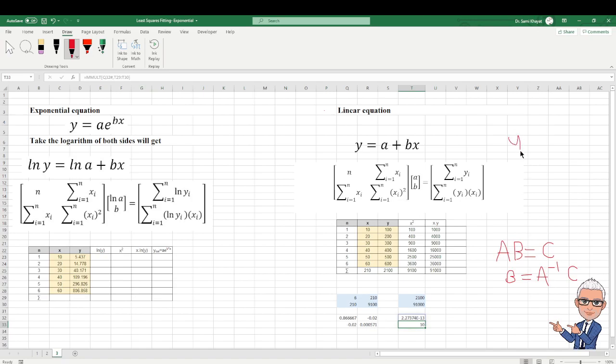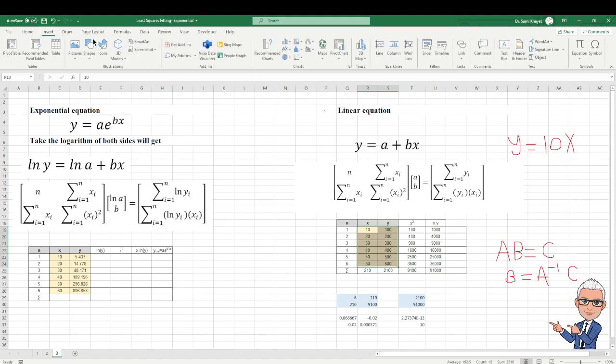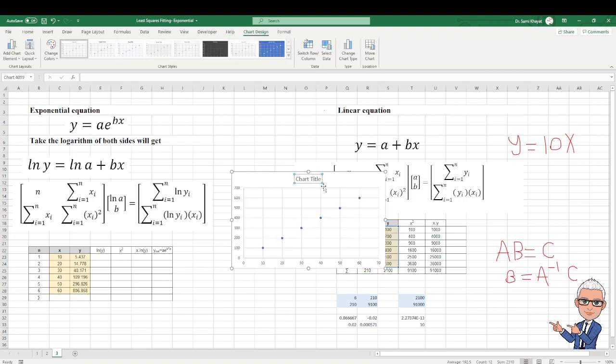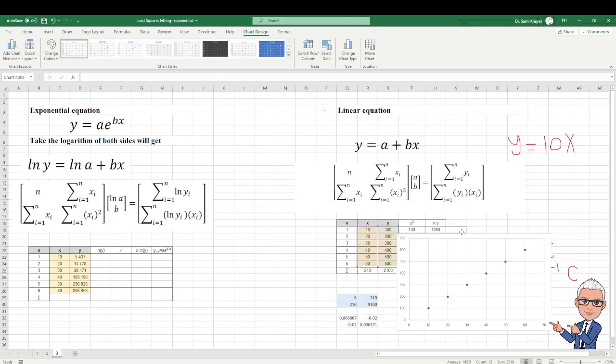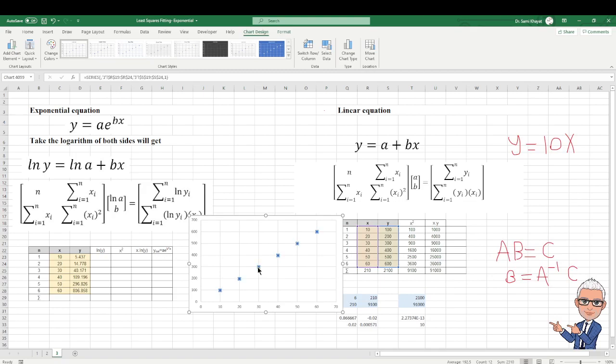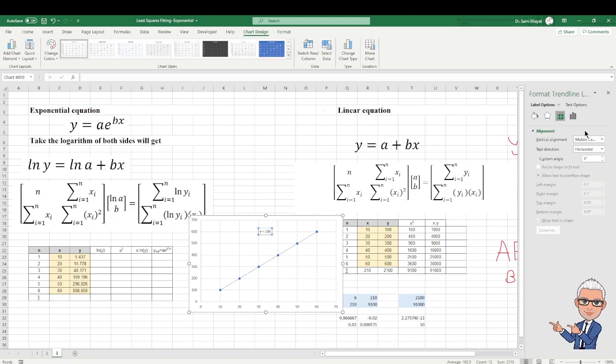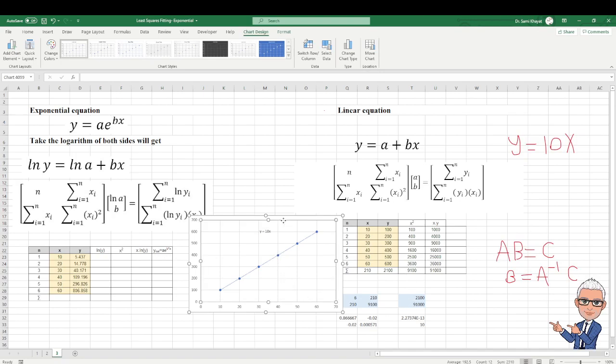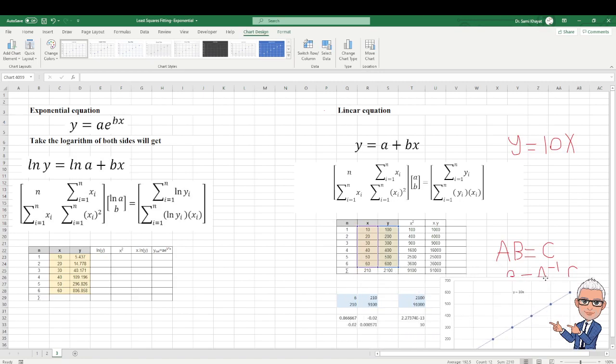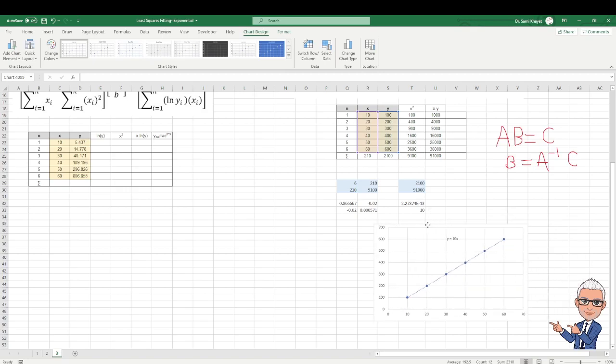The equation is y equals 10x. Now let's see if that's true. We can draw this data using this one. I will remove this one and then I will draw this data. Right click here, add trend. You can see I'm using linear. And then I want to find what is the equation. He gave me the equation, similar to what we have. This is how to solve it if it is linear.